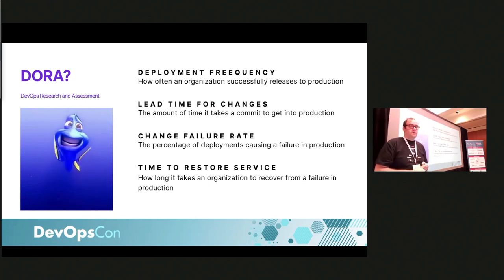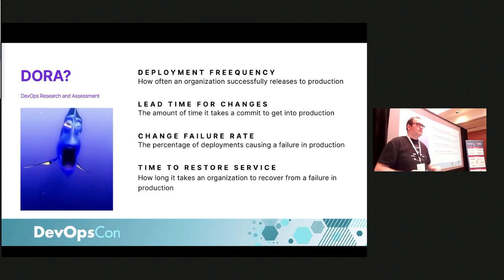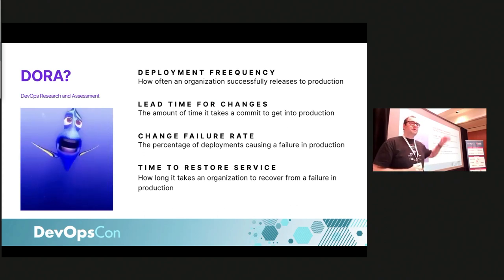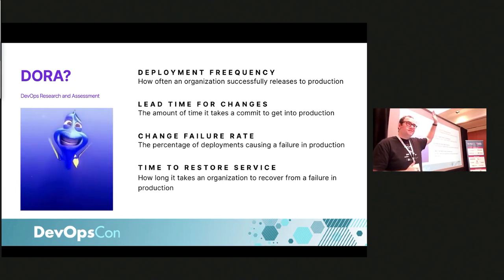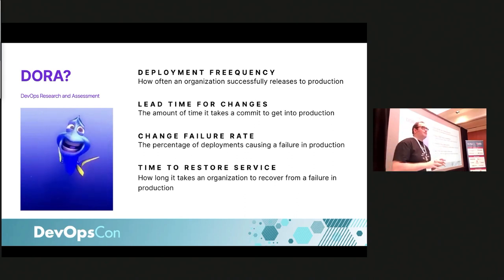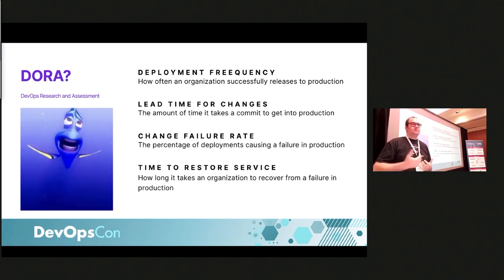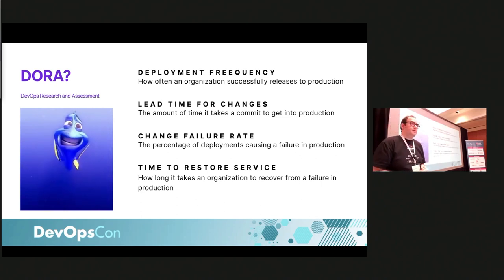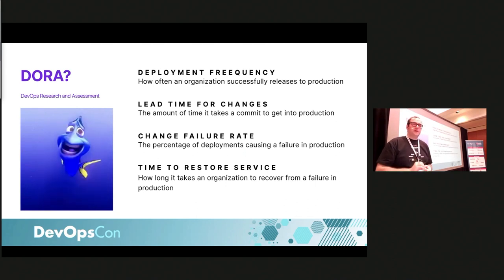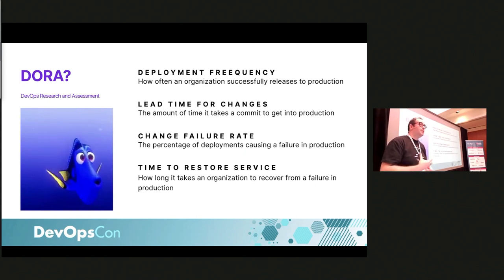The second metric is lead time for changes — how long does it take from the first commit to your Git repository until it hits production? In DORA metrics, a couple of days would mean you're actually quite slow, but it's still okay. The third is change failure rate — how often does failure happen when you cause changes? The less failure and the more often you do changes, the more efficient you are in your deployments.